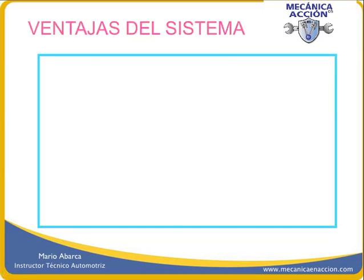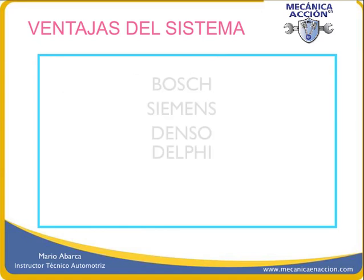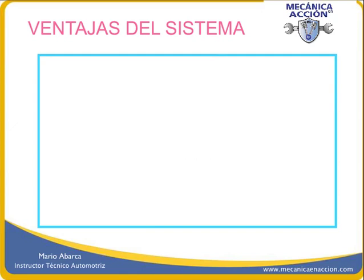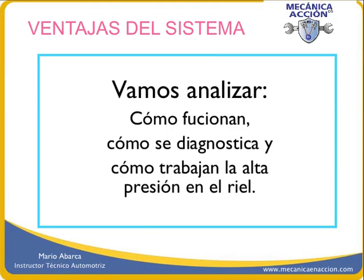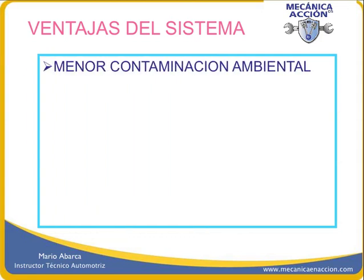¿Cuáles son las ventajas del sistema Riel Común? Actualmente existen cuatro casas fabricantes del sistema Riel Común: Bosch, Siemens, Denso y Delphi. Estas cuatro casas tienen acaparado la construcción de los sistemas Riel Común. En los próximos minutos vamos a desarrollar cómo funciona cada uno de estos sistemas, cómo se diagnostica y cómo logran trabajar la alta presión en el riel. Avancemos en las ventajas propias del sistema Riel Común: menor contaminación ambiental.